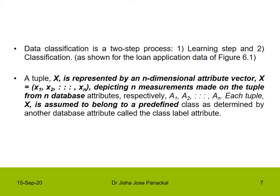A tuple x is represented by an n-dimensional attribute vector x = (x1, x2, ..., xn), depicting n measurements made on the tuple from n database attributes a1, a2, ..., an respectively. Each tuple x is assumed to belong to a predefined class as determined by another database attribute called the class label attribute. This is the basic representation of the tuple.